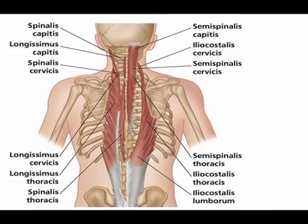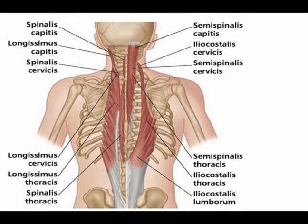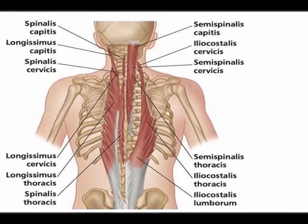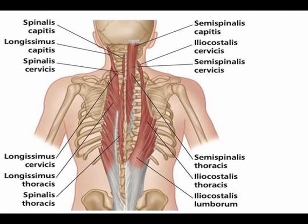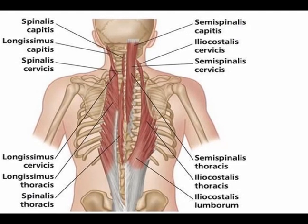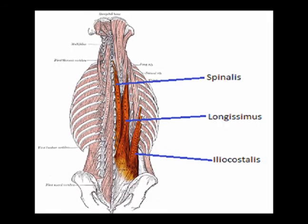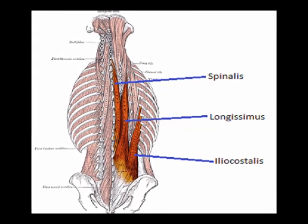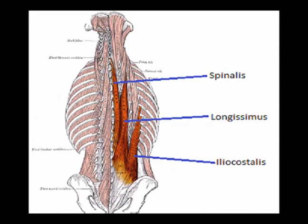The erector spinae muscles function as a unit to perform spinal extension. They start as one muscle in the lower lumbar spine and divide into three muscles as they reach the upper lumbar spine. From medial to lateral, these three muscles are the spinalis, the longissimus, and the iliocostalis.